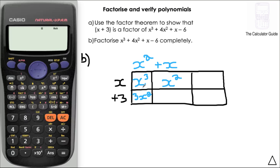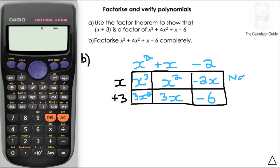I multiply 3 and x together to give 3x. Comparing that to the 1x in the polynomial, I need to subtract 2x, so in the next column I write minus 2x. What do I need to multiply x by to give minus 2x? It's minus 2. Then I multiply minus 2 by plus 3, giving minus 6. Comparing that to the last term in my polynomial, which is minus 6 — they match, so there's no remainder, as expected since x plus 3 is a factor.